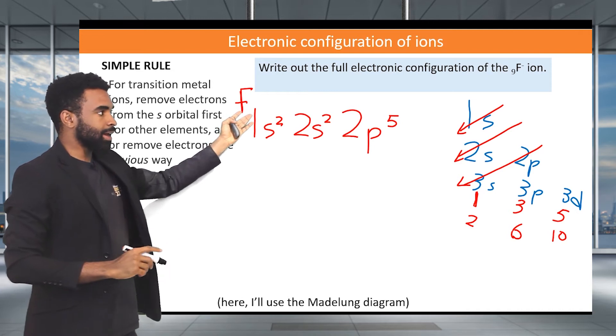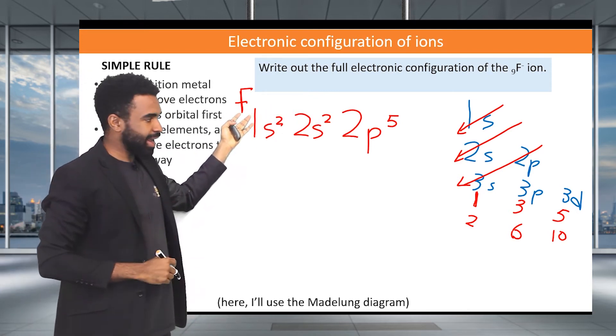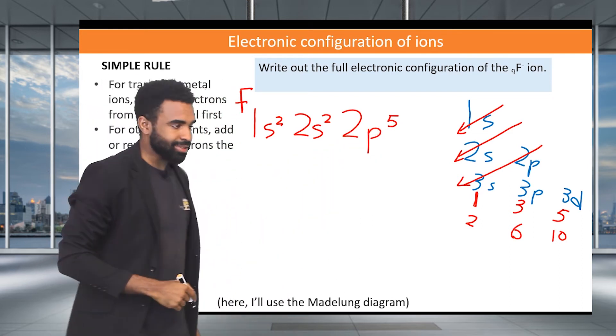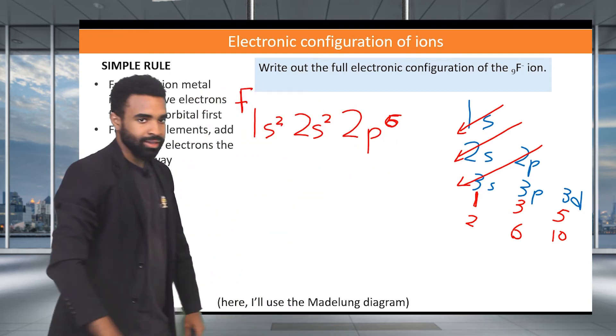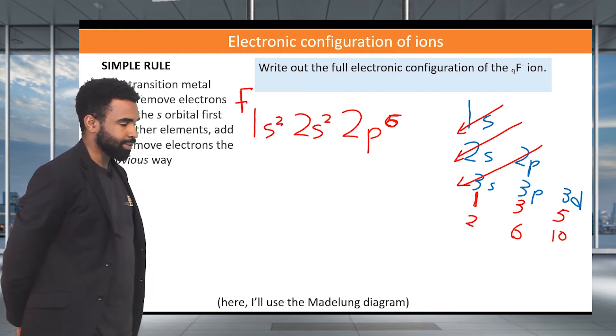But now this is neutral fluorine. How about when we add one electron to it to make it singly negative? Well, we do it the obvious way. We just add to the last one. So 2p6 would be the fluorine ion there. We are done. Nice and easy.